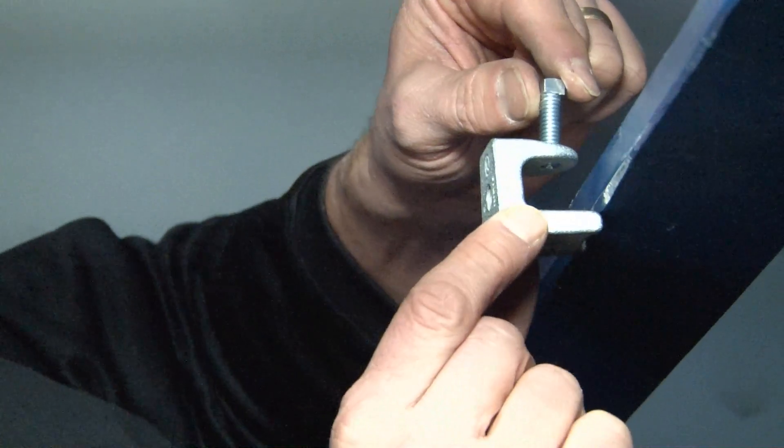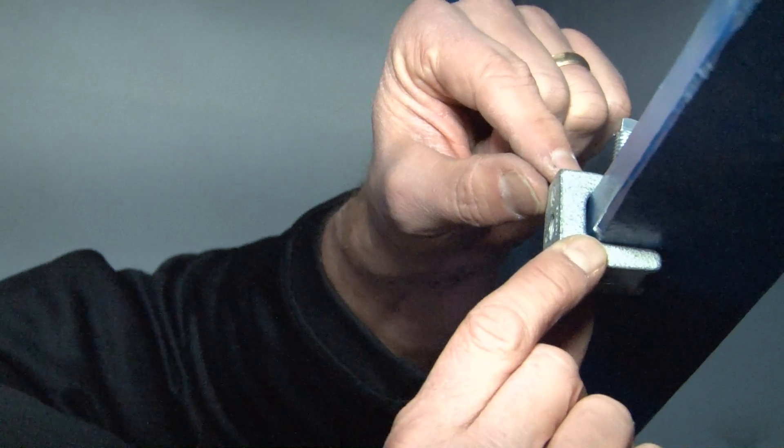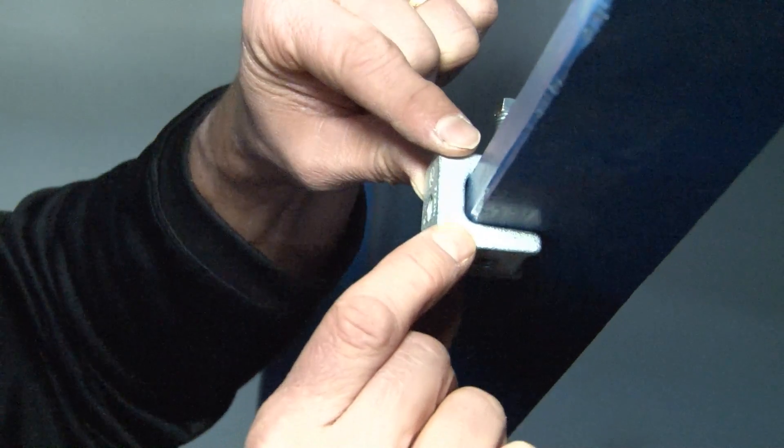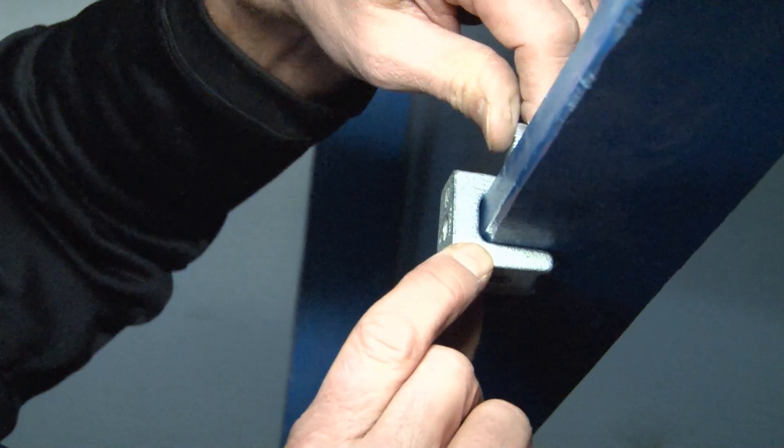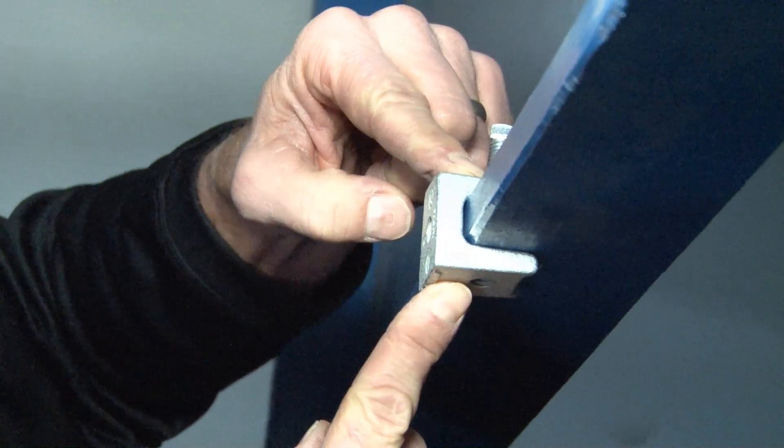We align it with the edge of the beam wherever you would like your fasteners to be dropped. Slide it along the beam, tighten the set screw on the very top, securing the beam clamp to the beam.